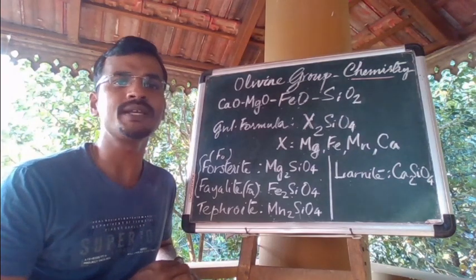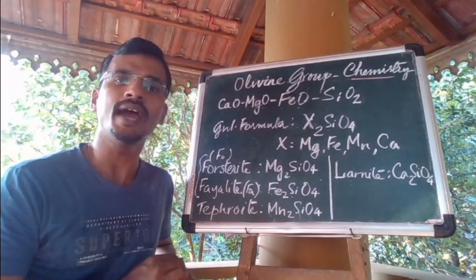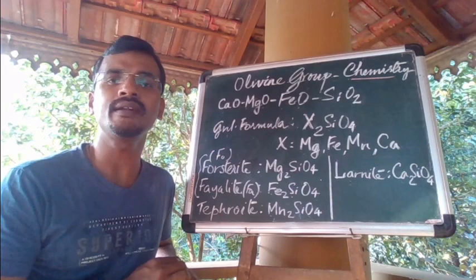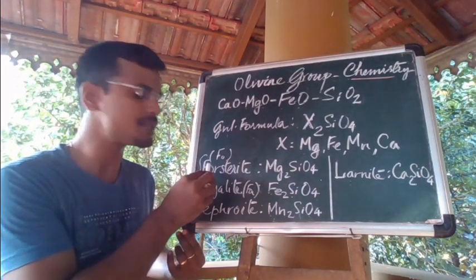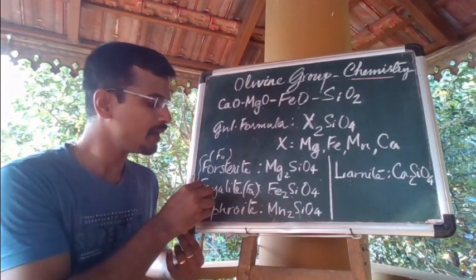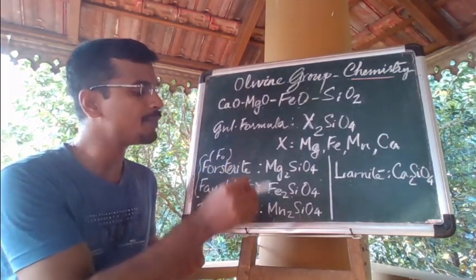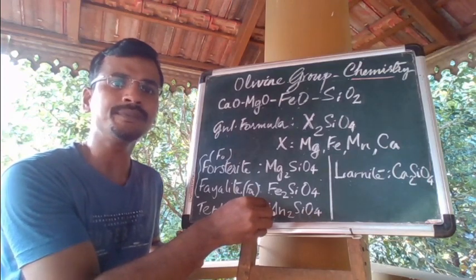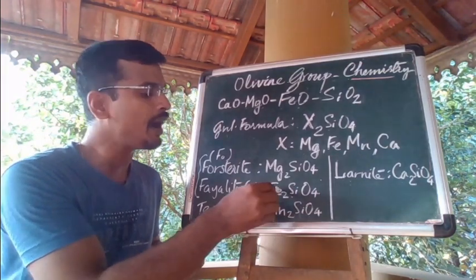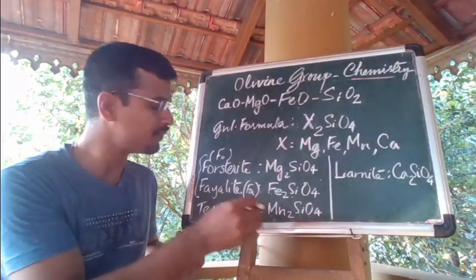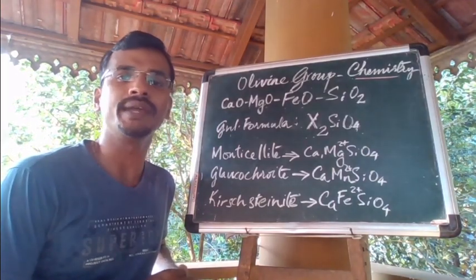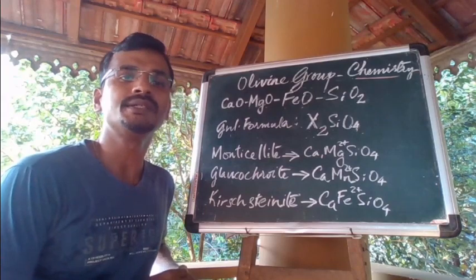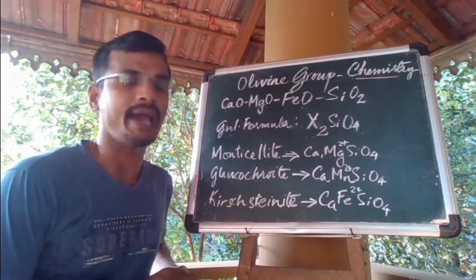When you see that Mn²⁺ may substitute for Fe²⁺, forming a relatively rare series between fayalite and tephroite, generally the solid solution occurs between forsterite and fayalite, and if the magnesium is replaced by manganese, you have a solid solution series or rare series between iron and manganese — the fayalite and tephroite series. Other rare members of the olivine group include monticellite, glaucochroite, and kirschsteinite, in which one of the octahedral sites is occupied by calcium.